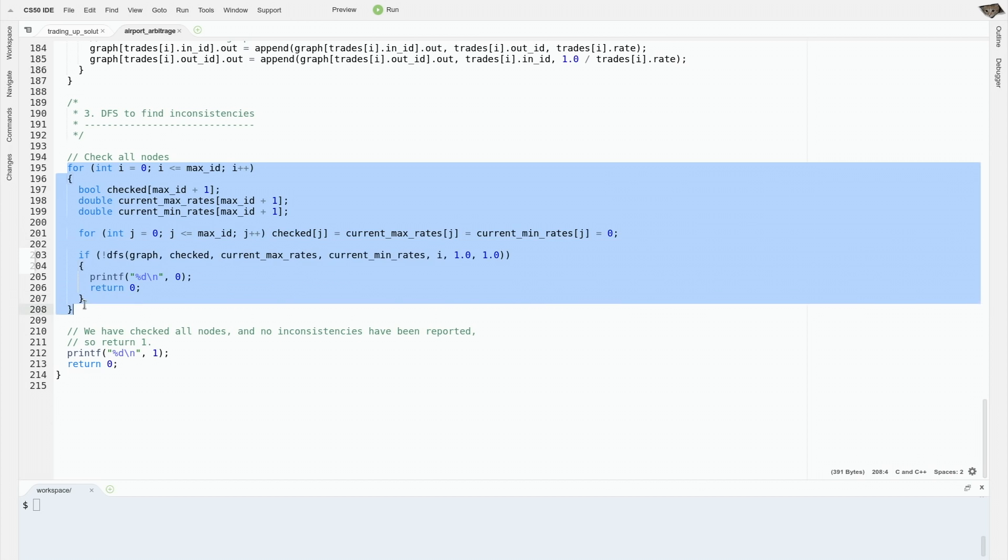After we've checked all the nodes, if no inconsistency has been reported, we'll return one saying that it's consistent. And this was Airport Arbitrage.